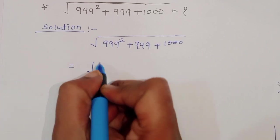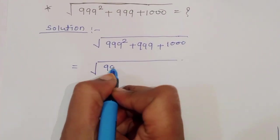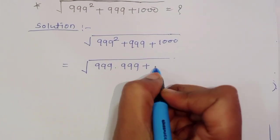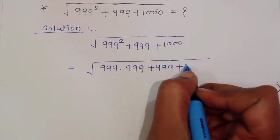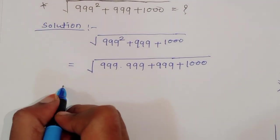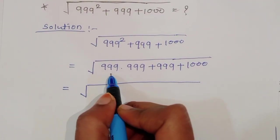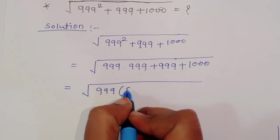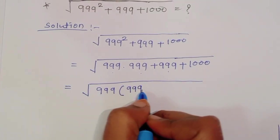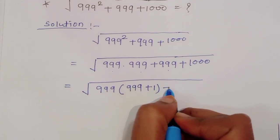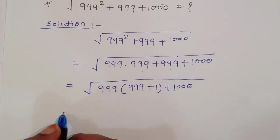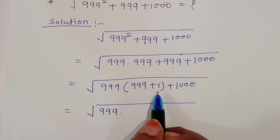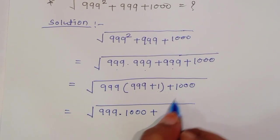We can write 999 times 999 because this is squared, plus 999 plus 1000. See here: 999, 999, 999 — so we can take 999 common, so what's left is 999 plus 1, plus 1000. This equals 999 times 1000 plus 1000.